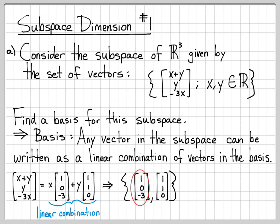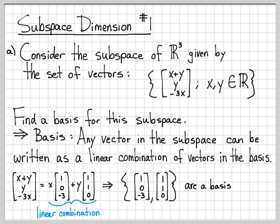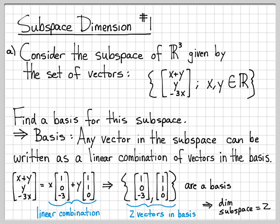So this collection of two vectors — (1, 0, -3) and (1, 1, 0) — is a basis for the subspace, because any vector in the subspace can be written as a linear combination of them by choosing x and y appropriately. If you give me a vector in this subspace, I can inspect the coordinates to determine x and y, then write it as x times the first basis vector plus y times the second. So what is the dimension of this subspace? The dimension of a subspace is simply equal to the number of vectors in its basis. Since we have two vectors in the basis, this is a two-dimensional subspace.